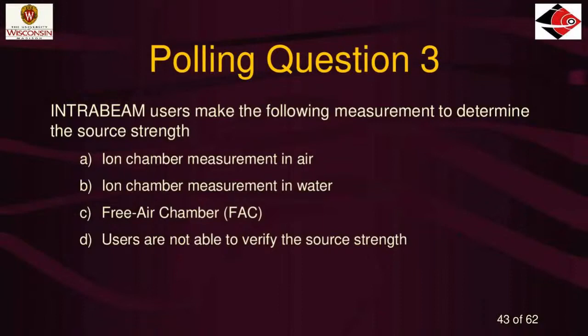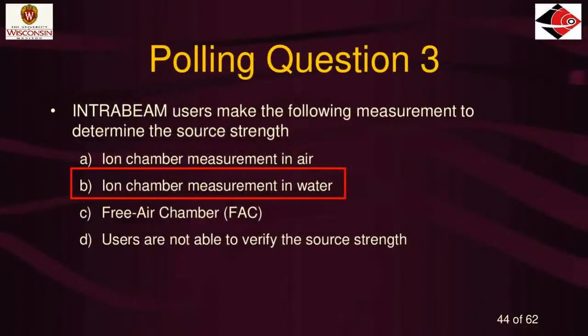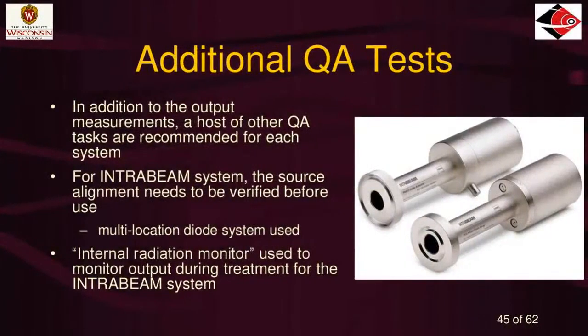The correct answer is B, ion chamber measurement in water. The IntraBeam system uses a water tank where you place a parallel plate chamber to get the strength of the source for the day, week, or month. The free air chamber is used for the Zoft source at NIST. Good job — most everybody got that.